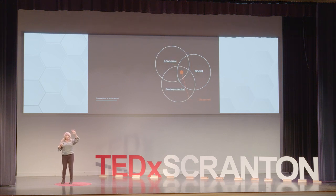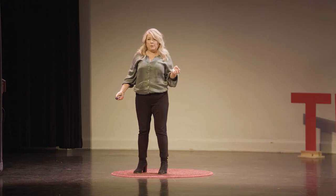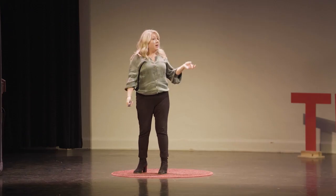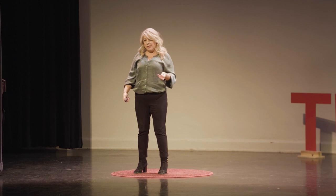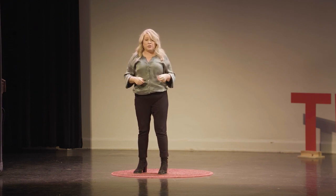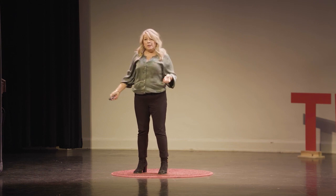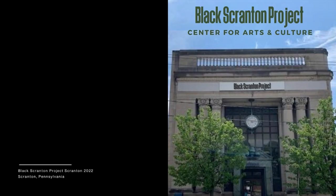When those three pieces — the economics, the environment, and the social — come together, you have a really well-designed, well-adaptive reused project. Here's a recent example I love: an old PNC bank building that sat abandoned in Providence Corners for quite a long time. It's a large, grand building that held that square. The PNC bank no longer needed it, so they gifted it to the Black Scranton Project.